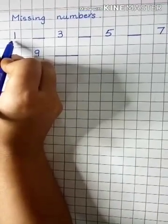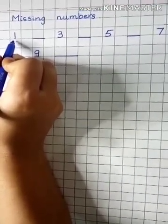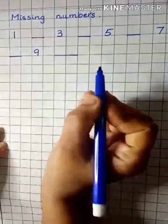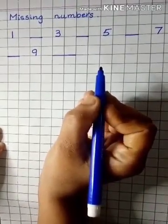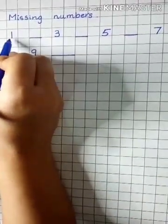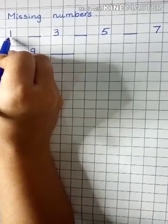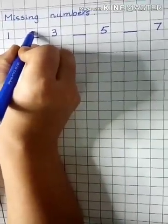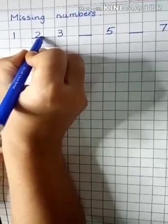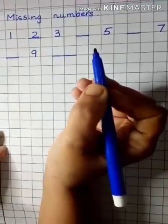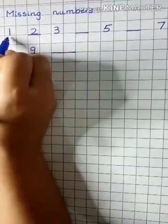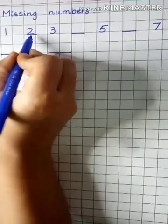One. Can you guess the missing number? This is one. The next number is two. Two. Start reading one, two, three.